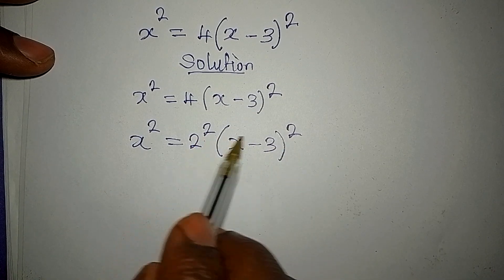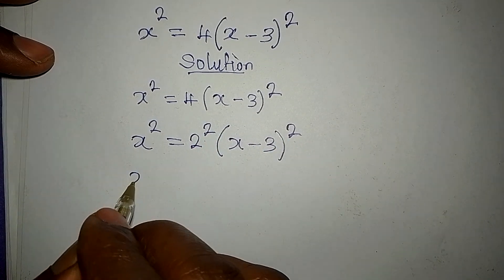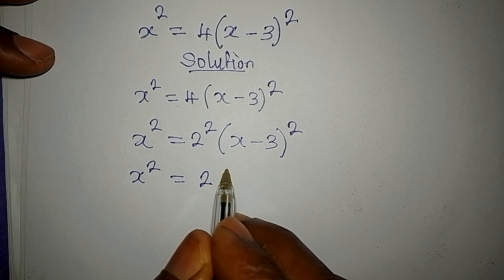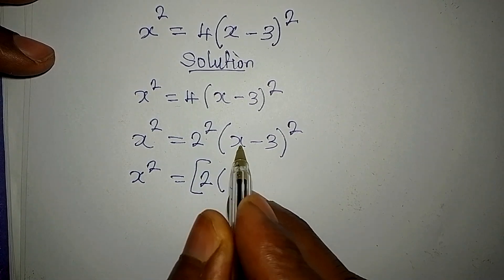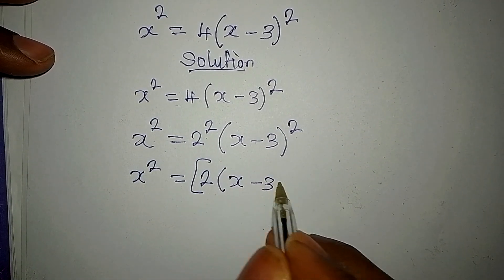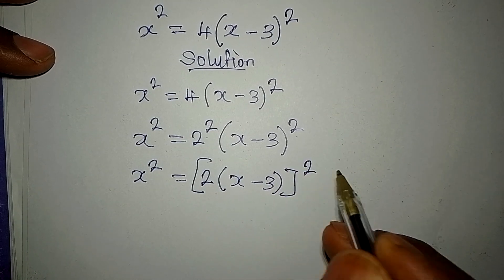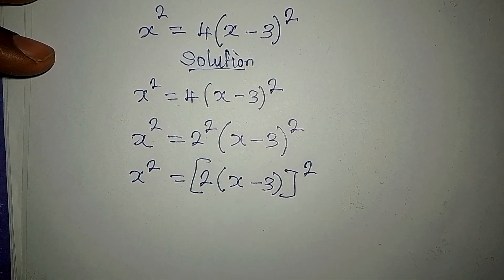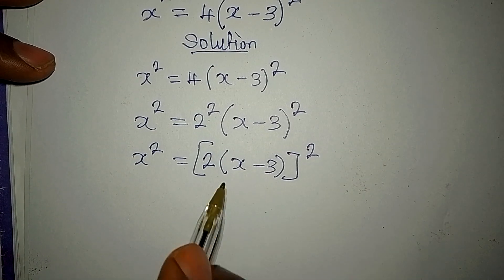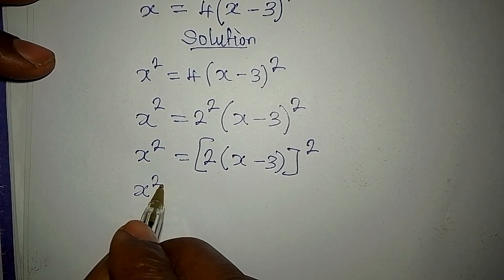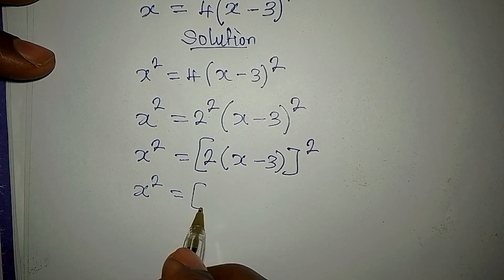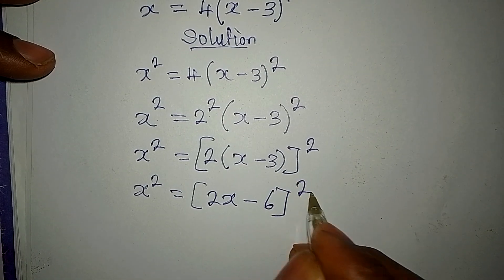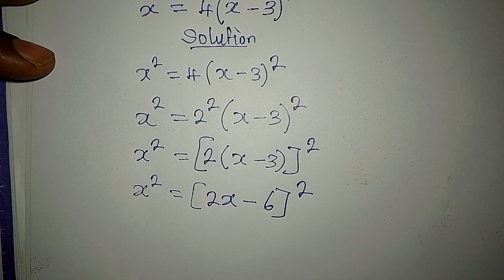Now that both of these are raised to the power of 2, we can combine them. So we have x squared equal to 2 times the bracket x minus 3, all raised to the power of 2. Opening that bracket gives us x squared equals 2x minus 6, raised to the power of 2. How did I get 2x minus 6? — 2 times x is 2x, and 2 times minus 3 is minus 6.